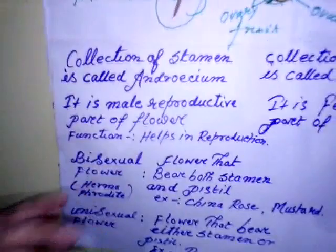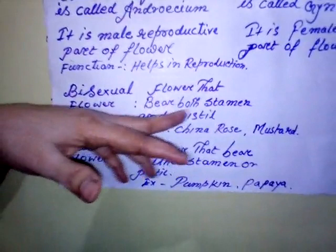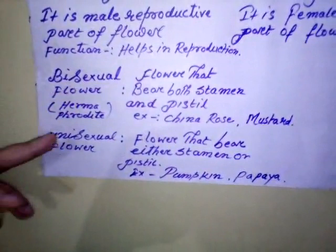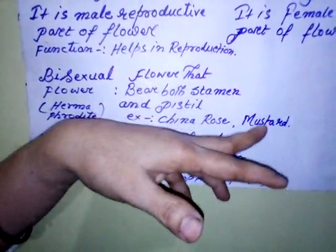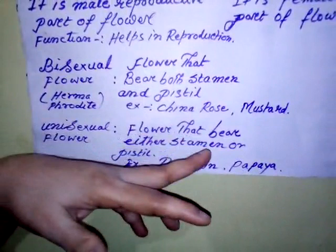Now, bisexual flower. Flowers that bear both stamen as well as pistil are known as bisexual flowers or hermaphrodite, like china rose and mustard. Flower that bears either stamen or pistil is known as unisexual flower, like pumpkin and papaya.